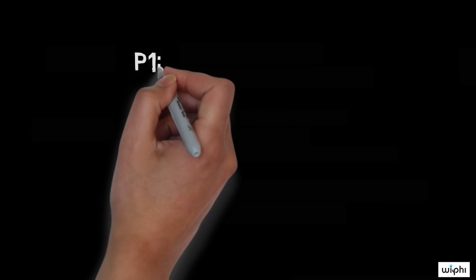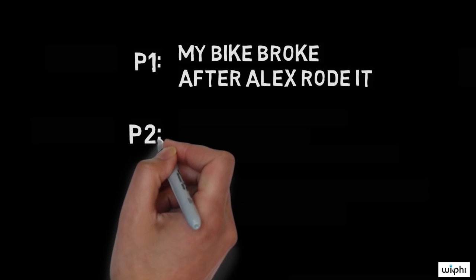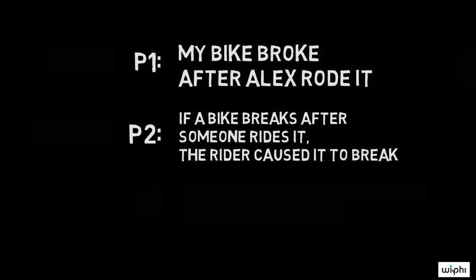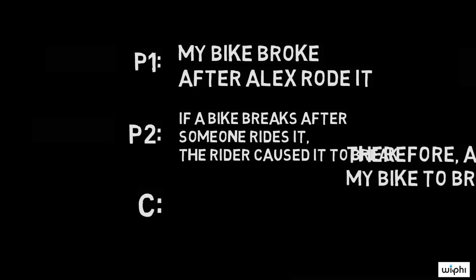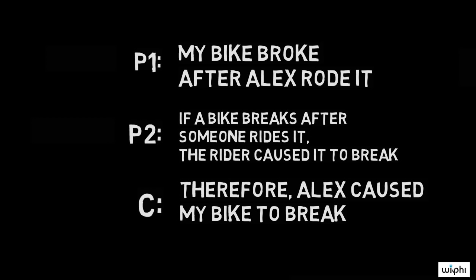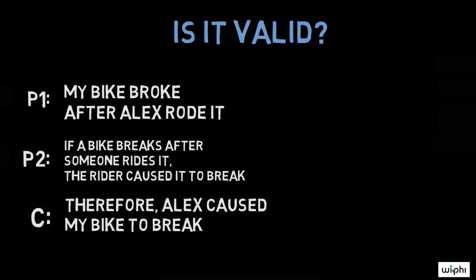Let's take another stab at my argument. Premise 1: My bike broke after Alex rode it. Premise 2: If a bike breaks after someone rides it, the rider caused it to break. Conclusion: Therefore, Alex caused my bike to break. Is this argument valid?